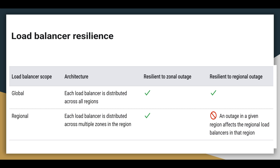When the load balancer scope is global, each load balancer is distributed across all regions. It is resilient to zonal outage and resilient to regional outage. For regional scope, each load balancer is distributed across multiple zones in the region. It is resilient to zonal outages, but an outage in a given region affects the regional load balancers in that region, so it is not resilient to regional outages.